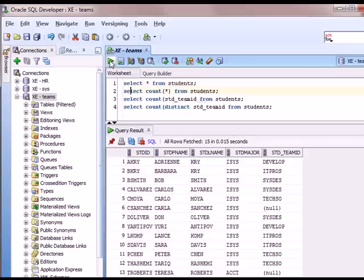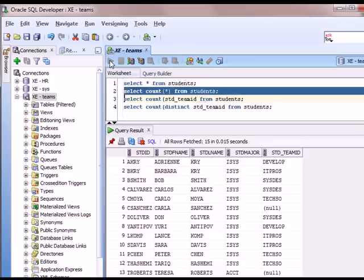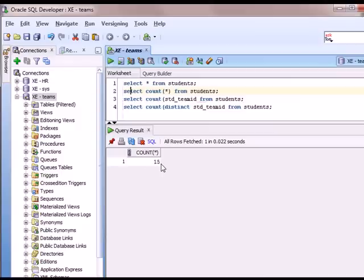When I do my count, just count asterisk, I get 15. So obviously it's counting every row in that table.